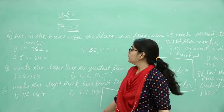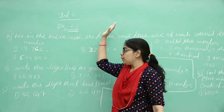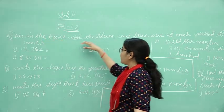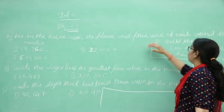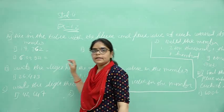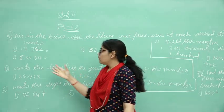Good morning my dear students. Let us go with our exercise 1.2. Fill in the table with the place and place value of each colored digit number. What we have to do here?